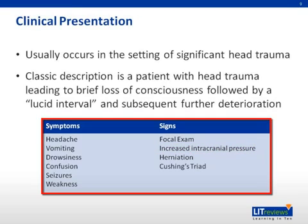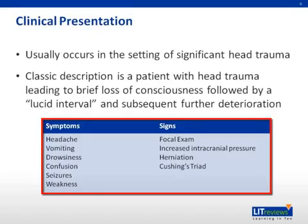The Monroe-Kelly doctrine describes an important principle: the volume within the cranium is fixed, consisting of blood, spinal fluid, and brain parenchyma. If one volume increases — for example, blood from a bleed — the pressure increases within the closed cranium. As a consequence, patients may present with Cushing's triad, which consists of hypertension, bradycardia, and a slow irregular breathing pattern. This response is thought to be caused by stimulation of mechanically sensitive regions in the paramedian caudal medulla.